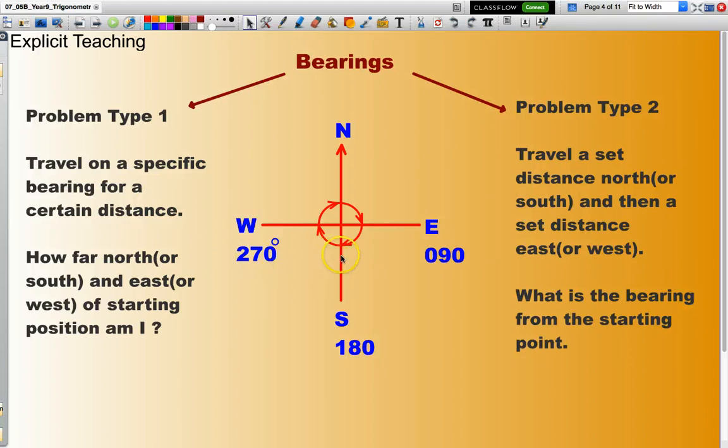It's a bit of a mouthful but basically, say for instance I travel on that sort of bearing here. The bearing would be something around 270 plus another 40, say bearing of 310 degrees. Now the question might ask how far north am I of my original position or how far west of my original position am I? You can see there will be right angle triangles and we will be working with those.